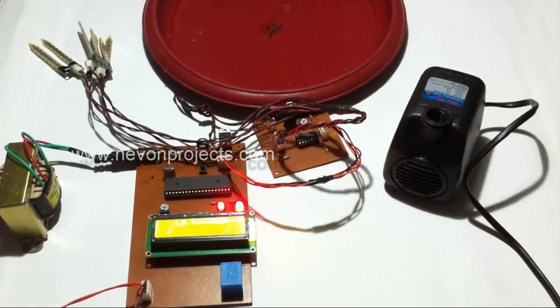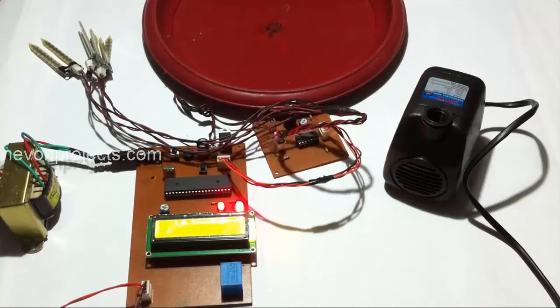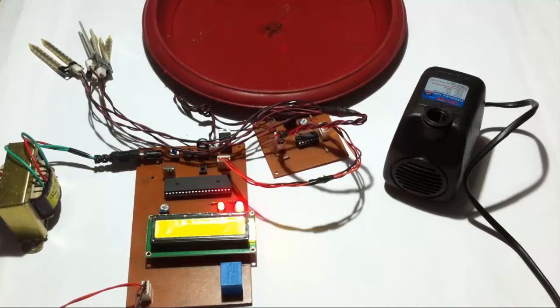This is useful for farmers so that they do not need to manually turn on the irrigation system by checking the soil moisture content. The system automatically does this for them by sensing the soil moisture content.